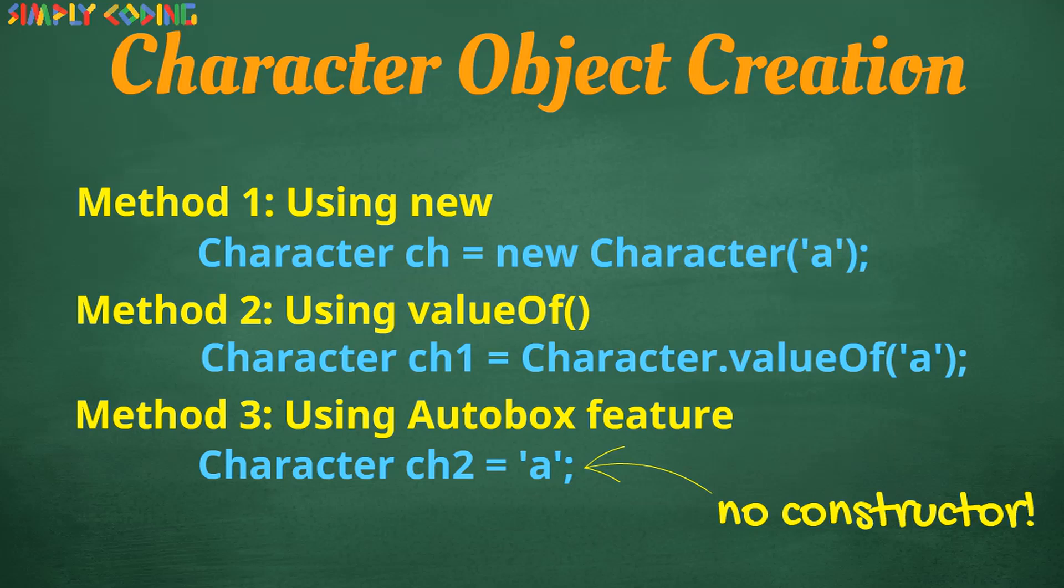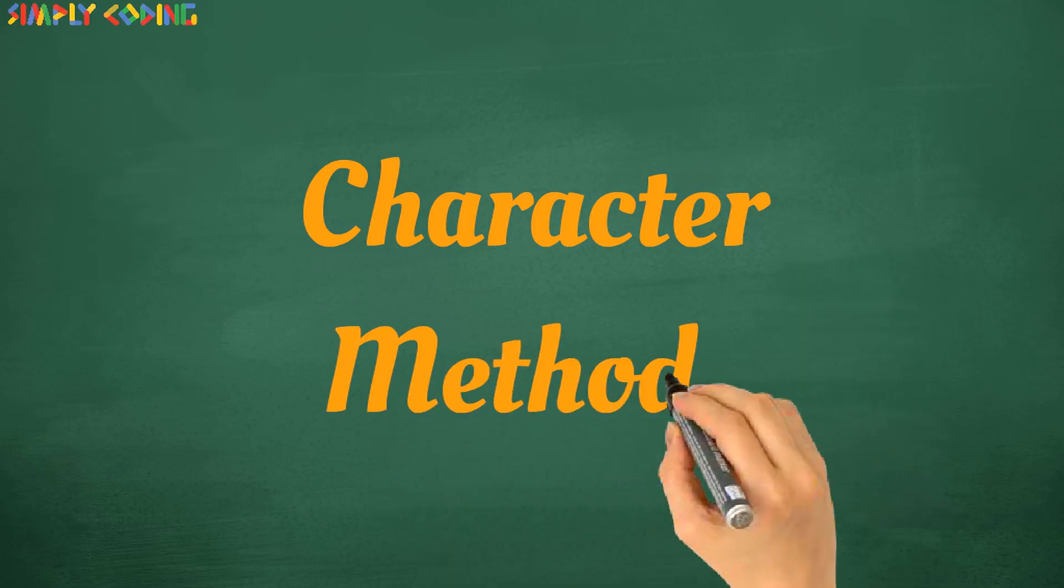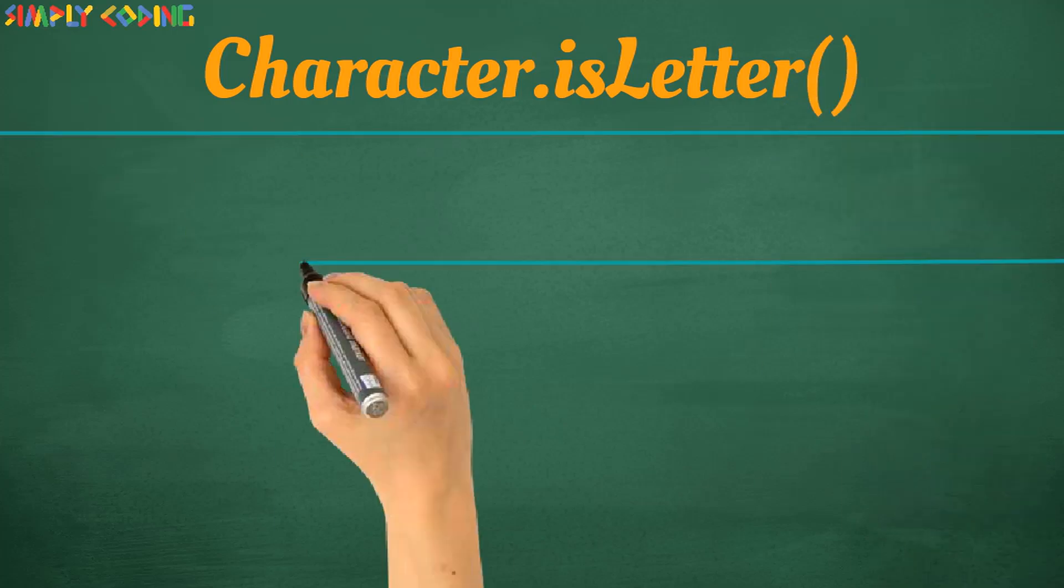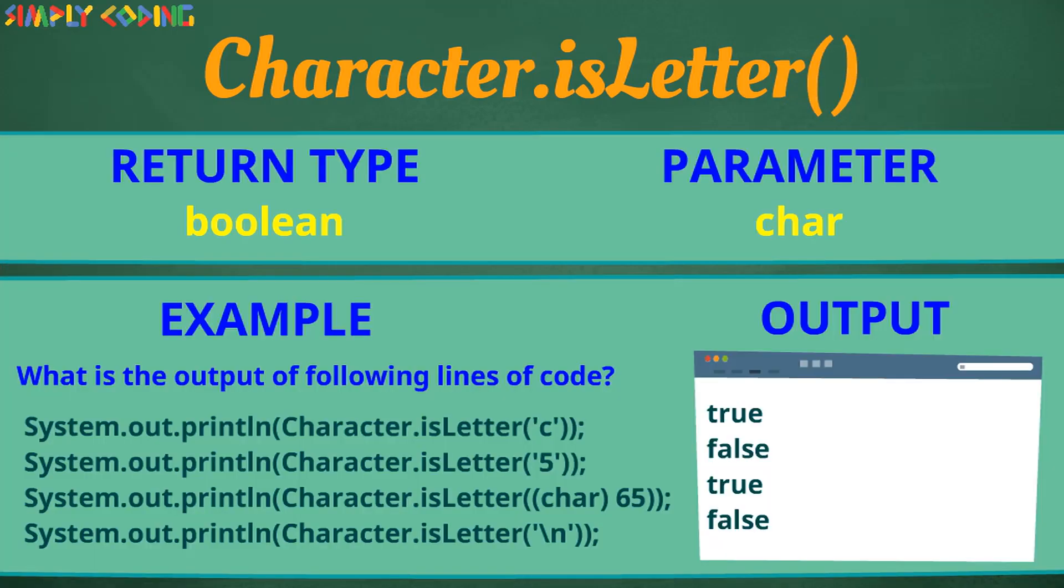It has many static methods. I will cover a few which we will use. First one is isLetter. It returns true if char passed is a letter otherwise it returns false. Now in the question you could get a char like c in quotes, a digit or typecasted unicode numbers or even an escape sequence. Do note that in this c is char and 65 is char as it is ASCII value for capital A while remaining two are not. So only in these cases true is printed.